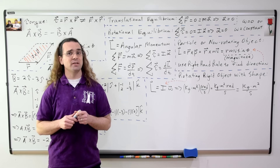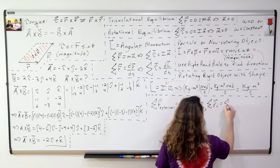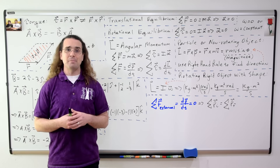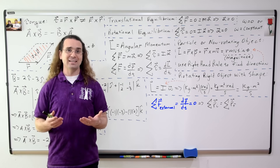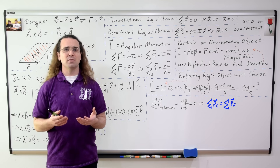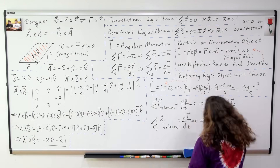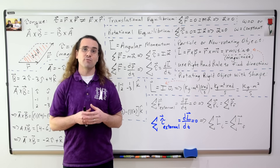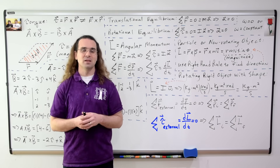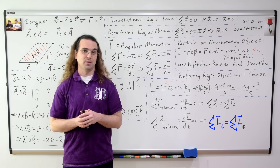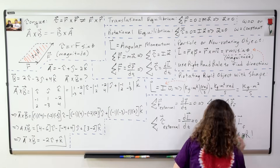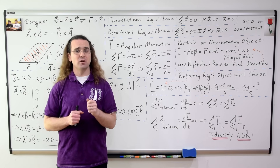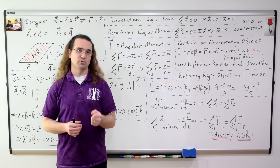The derivation of the conservation of linear momentum of a system is: if the net external force acting on the system equals zero, then the derivative of the momentum of the system with respect to time is equal to zero. We can do the same thing to derive conservation of angular momentum. One important difference to remember is that torque and angular momentum are relative to an axis of rotation, so whenever you use conservation of angular momentum you have to identify your axis of rotation.